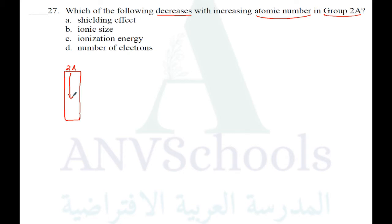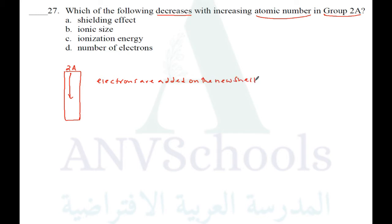To answer these questions, let's see first. As you go down the group, electrons are added on a new shell. What does it mean? The atom will have more and more inner shells. So, shielding effect increases.